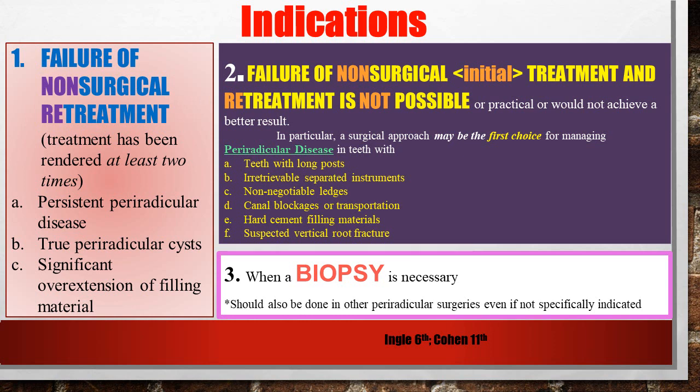Here are the actual indications for surgical intervention in the present day. If non-surgical treatment and non-surgical retreatment — using H-files, endodontic solvent, and intracanal medicaments — has failed at least twice, then yes, we can consider surgical intervention. When there is persistent periradicular disease, meaning you have performed RCT and tried retreatment and still the periradicular lesion is not regressing or is growing in size, then we may have to intervene surgically. When there are true periradicular cysts, surgery is needed as cysts will not resolve with medication alone.